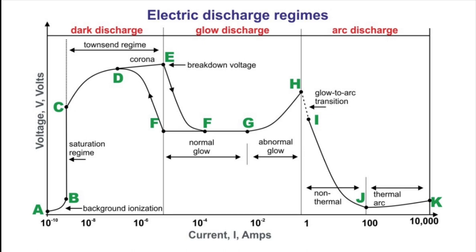G through H: in the abnormal glow regime above point G, the voltage increases significantly with increasing total current in order to force the cathode current density above its natural value and provide the desired current. Starting at point G and moving to the left, a form of hysteresis is observed in the voltage-current characteristic. The discharge maintains itself at considerably lower currents and current densities than at point F, and only makes a transition back to the Townsend regime. Arc discharges — arc mode, H through K: at point H, the electrodes become sufficiently hot that the cathode emits electrons thermionically. If the DC power supply has a sufficiently low internal resistance, the discharge will undergo a glow-to-arc transition (H through I). The arc regime from I through K is one where the discharge voltage decreases as the current increases, until large currents are achieved at point J, and after that the voltage increases slowly as the current increases.